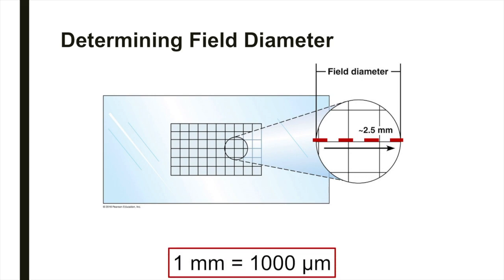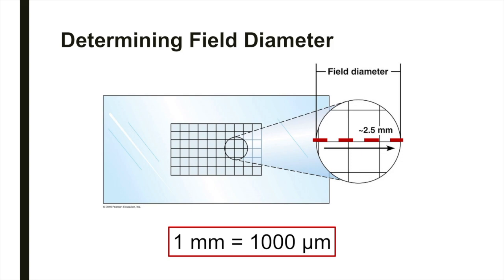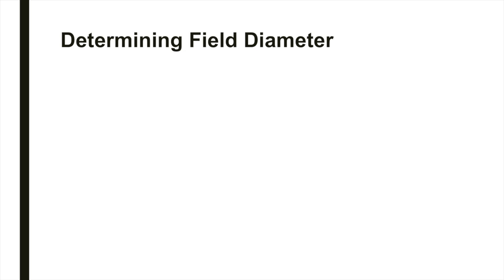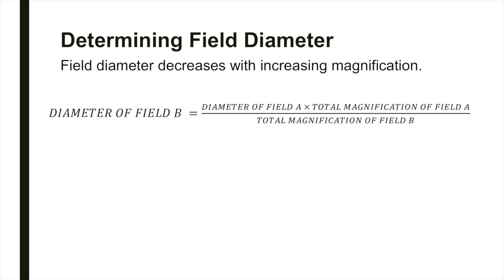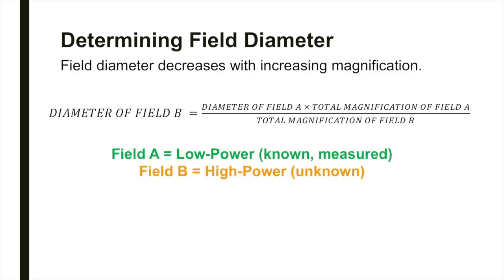It's important to note that one millimeter is equivalent to 1,000 micrometers. The microscope field decreases with increasing magnification, making it difficult to measure on high power and oil immersion. In order to estimate the field diameter on high power and oil immersion, you'll use this simple formula: diameter of field B equals diameter of field A times total magnification of field A divided by total magnification of field B, where A represents the known or measured field and B represents the unknown field.